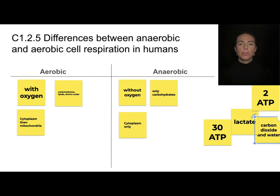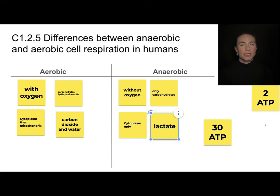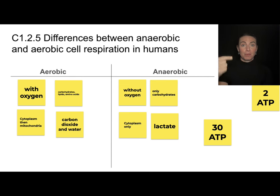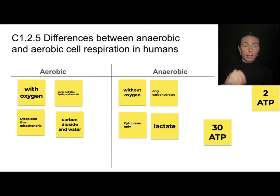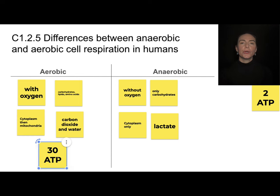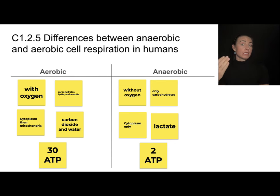Aerobic pathways produce carbon dioxide and water as byproducts, while anaerobic pathways in humans produce lactate. The biggest difference is energy production: if oxygen is available, organisms will always use the aerobic pathway because it can produce 30 ATP per molecule of glucose, whereas an anaerobic pathway can only produce a total of 2 ATPs. So the aerobic pathway is much more energy efficient when oxygen is available.